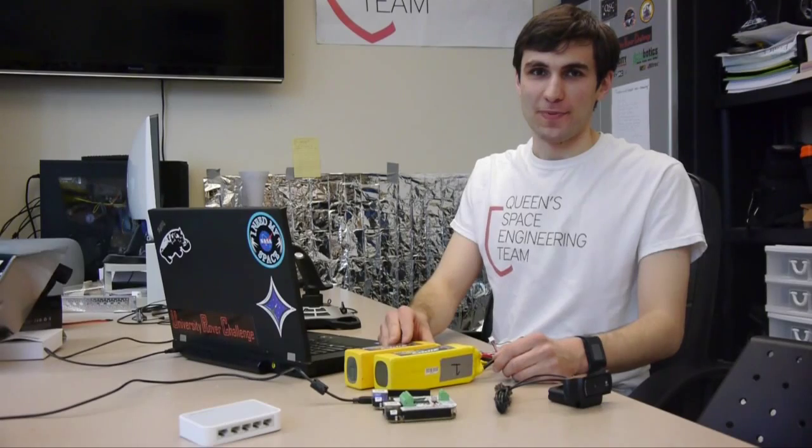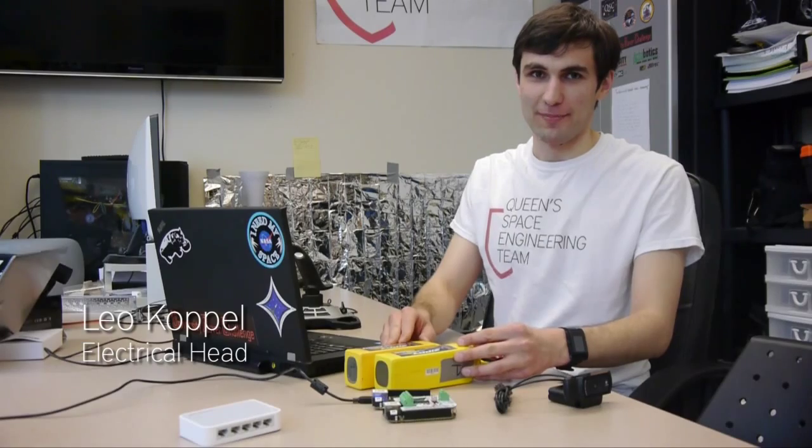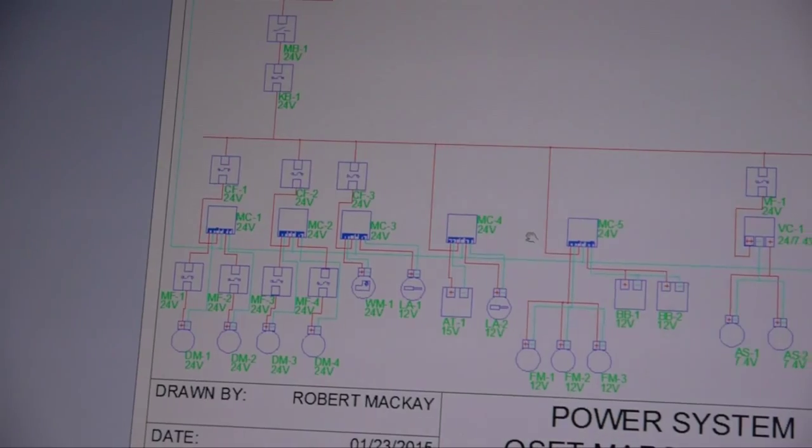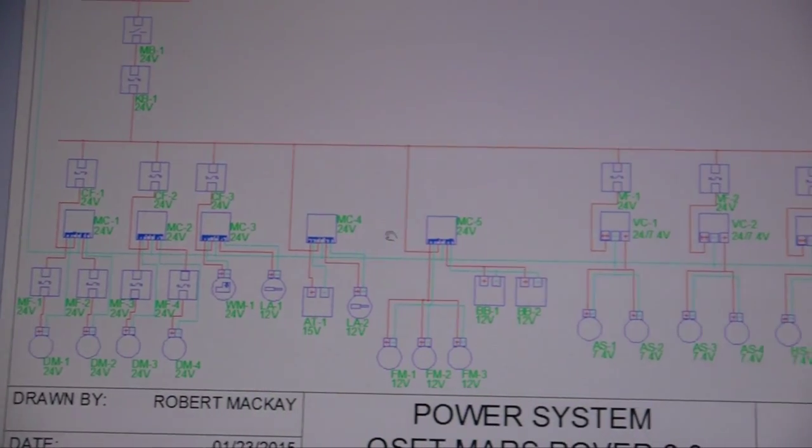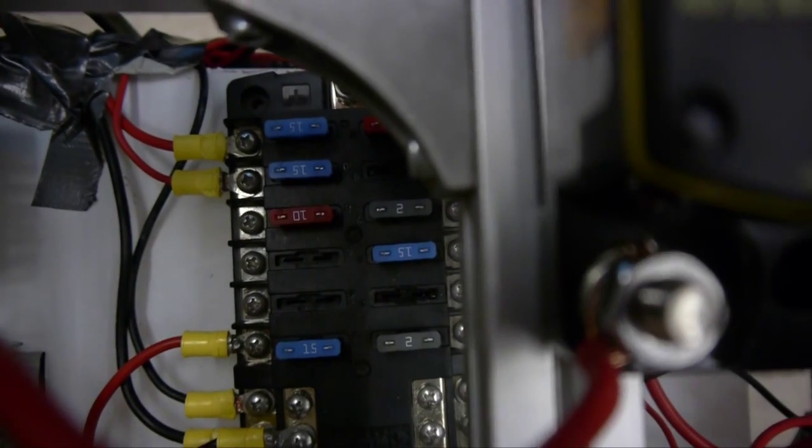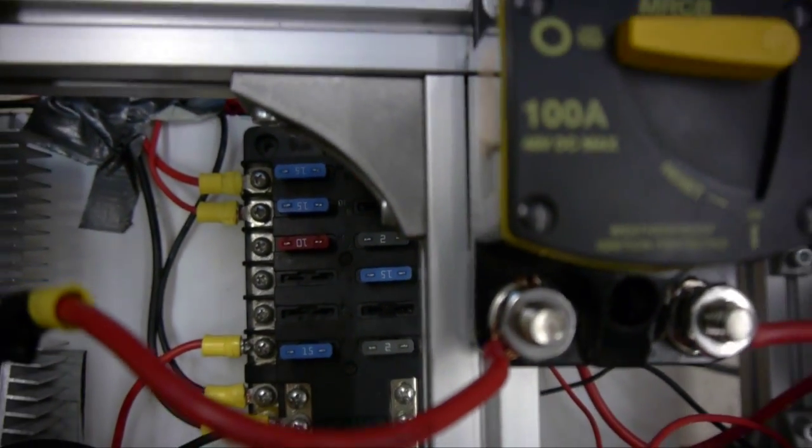On the electrical side, our rover is powered by two of these 5,000 mAh lithium polymer batteries. These will happily provide over 100 amps, which is why we have a system of fuses, a breaker, and a switch on the rover to protect it. This will soon be replaced by a proper big red button e-stop.